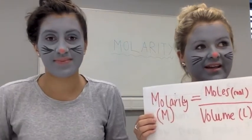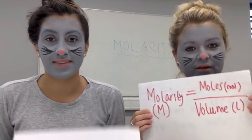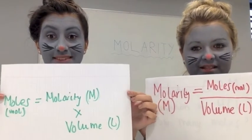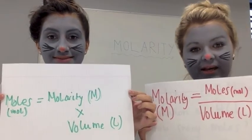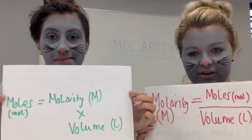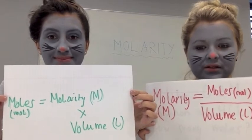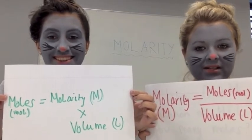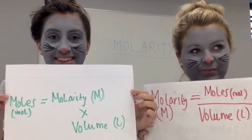We can rearrange this original equation to find any missing value. For example, if we wanted to find the number of moles, we could take the molarity and multiply it by the volume in litres.